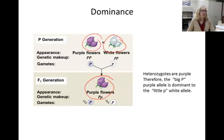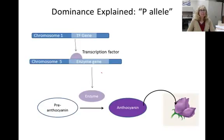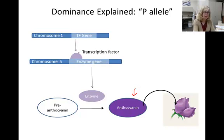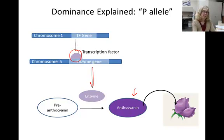But what does that mean? What makes purple stronger than white? Here is the biology that actually causes simple dominance. The purple color is due to a pigment called anthocyanin. Two genes are very important for making this pigment. The gene on one chromosome makes a protein that's a transcription factor. This transcription factor then binds to a gene on a different chromosome, and this gene codes for an enzyme needed to catalyze the reaction that turns a pre-anthocyanin molecule into the active purple pigment anthocyanin.